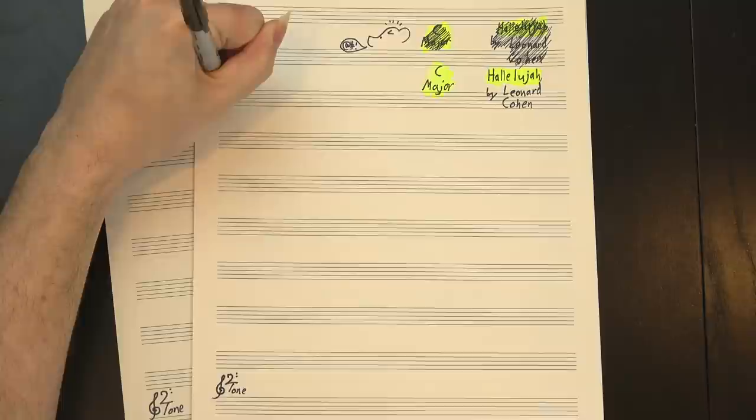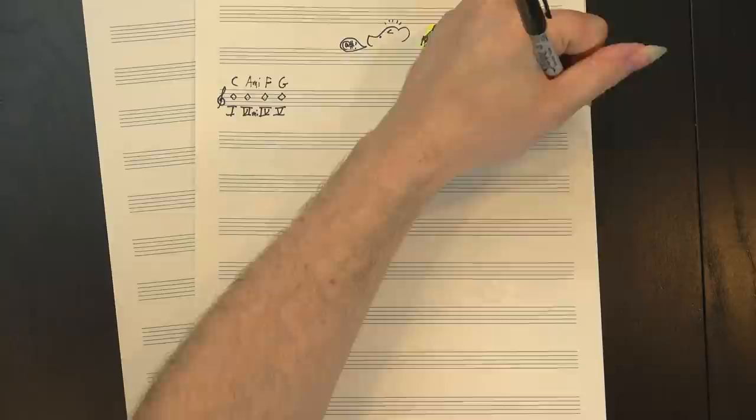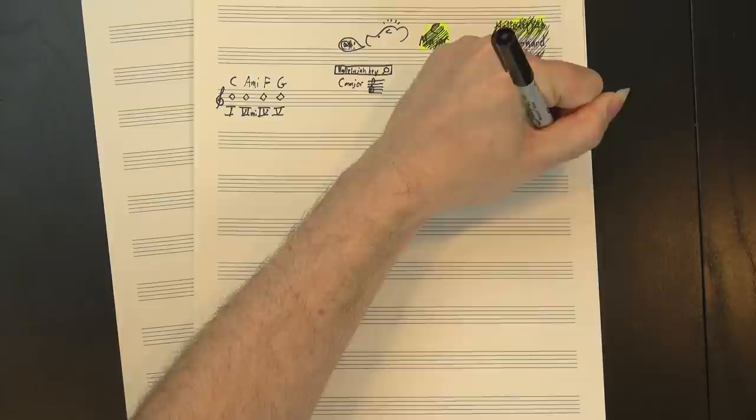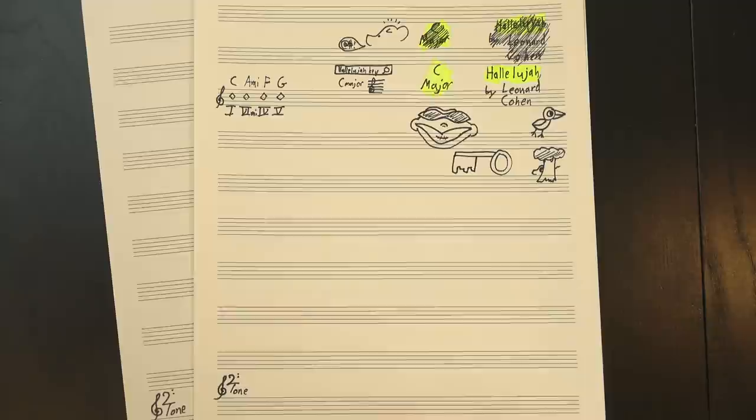The harmony relies almost exclusively on C, A minor, F, and G, the four most fundamental chords in that key, and the melody ultimately resolves to that note. This isn't difficult, even Google agrees with me. And yet, I can't shake the feeling it's a bit more complicated than that. In fact, I'm not even sure Hallelujah is in a key. Let me explain.